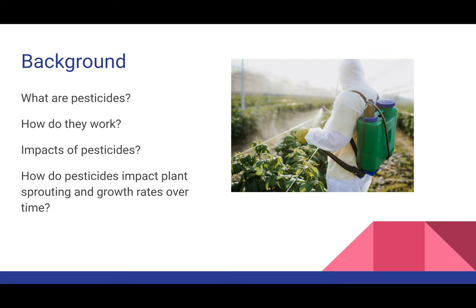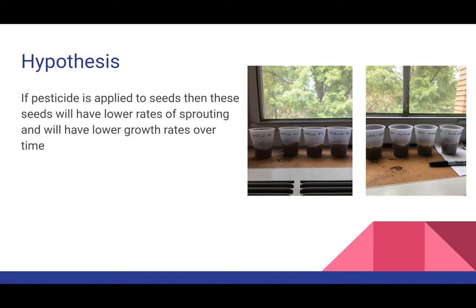Let's get a little background. What are pesticides? Most of you probably know what pesticides are, either through using them in your house or through learning about them in school. They're basically any chemical compound used to prevent insects and pests from eating plants and agriculture. This works by actually interfering with the nervous system of pests, which ends up killing them most of the time. The last couple decades it has come out that pesticides can be detrimental and cause many adverse effects in humans. More specifically, I wanted to look at the effect of pesticides on plant sprouting and growth rates over time.